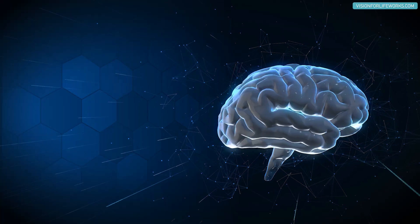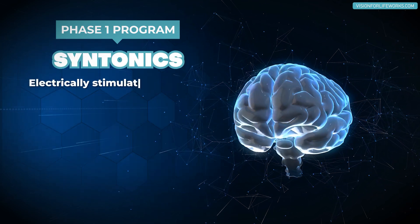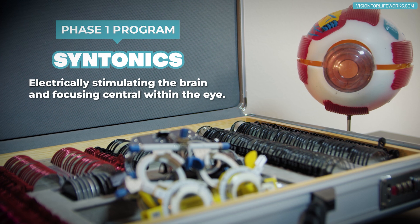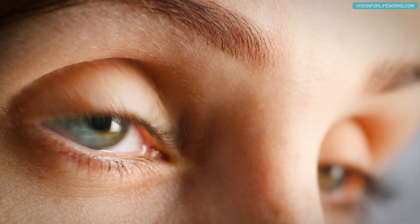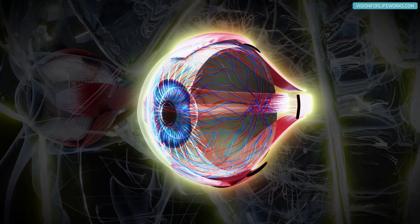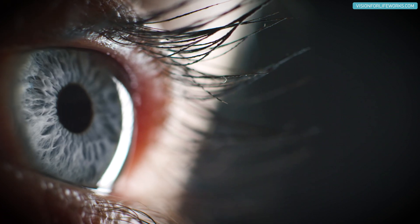So how are we doing this — how does it work to improve eyesight and decrease axial length progression? What we're doing in our program is electrically stimulating the brain and the focusing center within the eye. There's a muscle that works on the lens called the ciliary muscle — it contracts and relaxes as we shift focus from one distance to another. It is that repeated contracting and relaxing that causes the eye to elongate over time, especially when the eye is constantly in a state of hard contraction to focus.